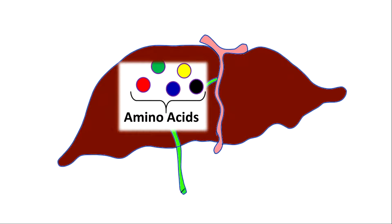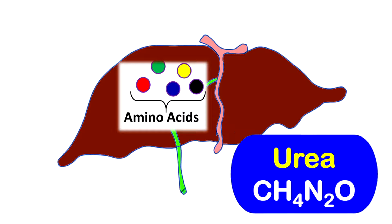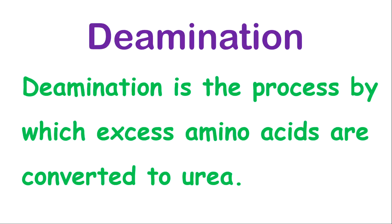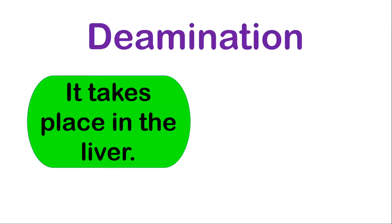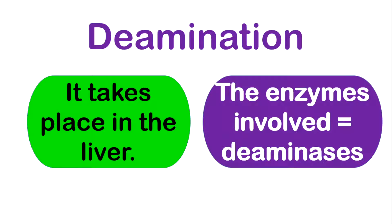The liver plays an integral role in removing excess amino acids in the form of urea. Deamination is a process by which excess amino acids are converted to urea. It takes place in the liver and is aided by enzymes known as deaminases.